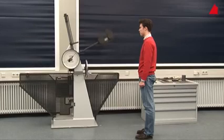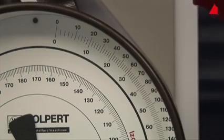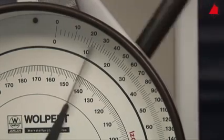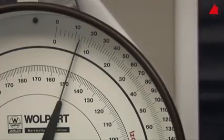The specimen absorbs part of the pendulum's energy so the pendulum doesn't reach the full height on the other side. The amount of energy that has been absorbed by the specimen can now be read off at the position of the drag indicator. It only amounts to 13 joules in this test.